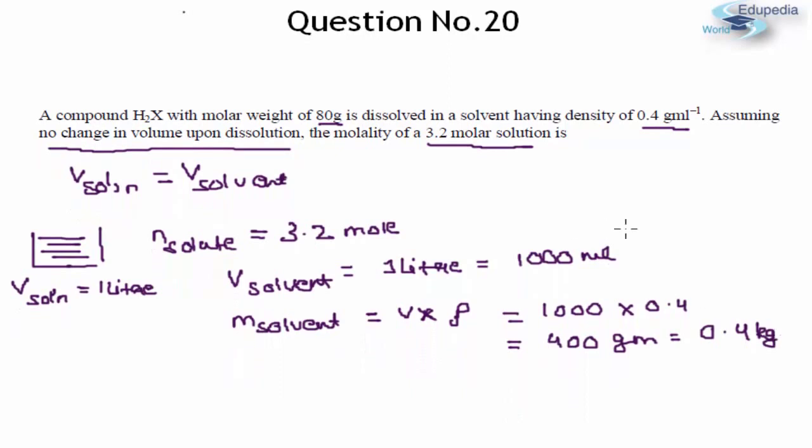Now the question becomes fairly simple. We have been asked to calculate molality which is represented by a small m and molality as we all know the formula is moles of solute upon the mass of solvent in kg. So our moles of solute will be equal to 3.2 and the mass of solvent will be 0.4. Clearly on solving this you will get 8 as your answer. So that would be the answer to the question.